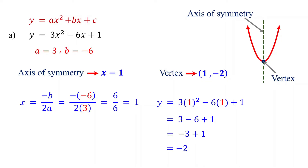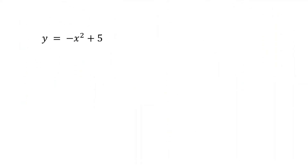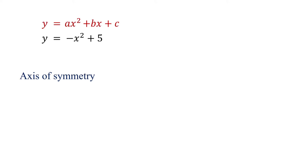Now it is your turn. Please pause the video and give it a try. Since the function is in standard form, first find the axis of symmetry using x equals negative b over 2a. By the way, if you are curious about where this formula comes from, I will show you how to derive it at the end of the video.